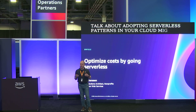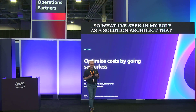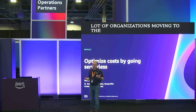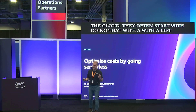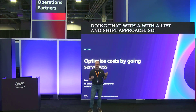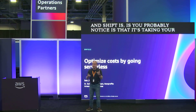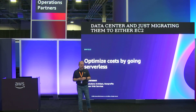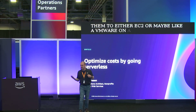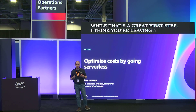What I've seen in my role as a solution architect is that a lot of organizations moving to the cloud often start with a lift-and-shift approach — taking your existing VMs from your on-prem data center and migrating them to either EC2 or VMware on AWS. And while that's a great first step, I think you're leaving a lot on the table in terms of cost optimization and efficiencies.